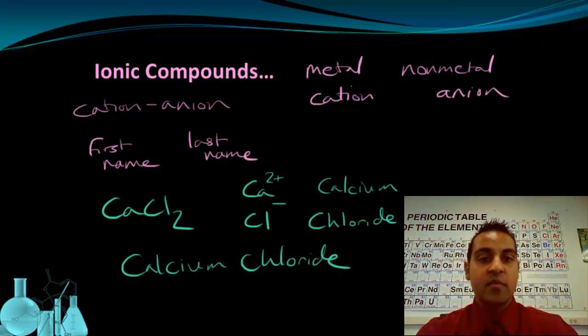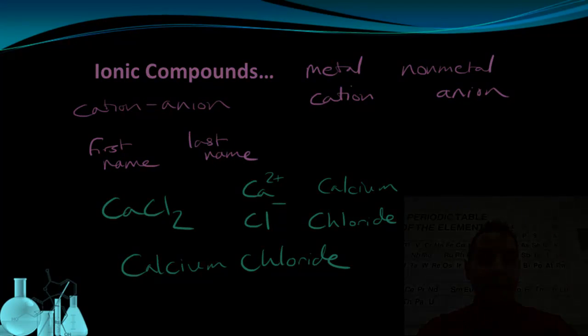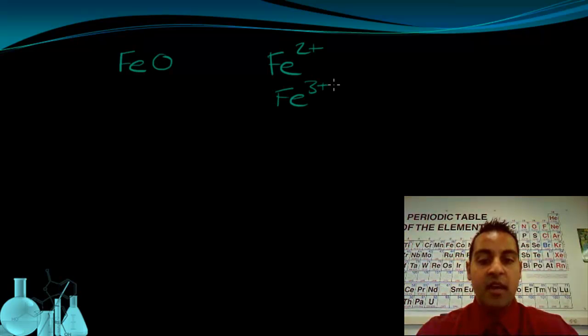Let's take a look at a second case that's a little bit more complicated. For our second case, let's look at a compound made of iron and oxygen. This is going to be a little bit more tricky than the last one because iron is one of those transition metals that can have multiple oxidation states. Iron can be a 2+ ion or iron can have a 3+ ion.